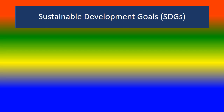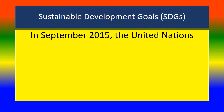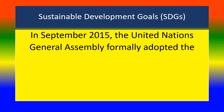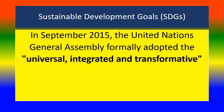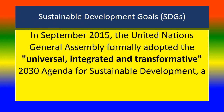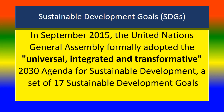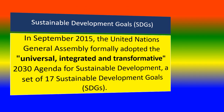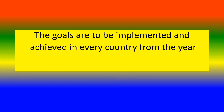Sustainable Development Goals. In September 2015, the United Nations General Assembly formally adopted the Universal, Integrated and Transformative 2030 Agenda for Sustainable Development — a set of 17 Sustainable Development Goals, or SDGs. The goals are to be implemented and achieved in every country from 2015 to 2030.